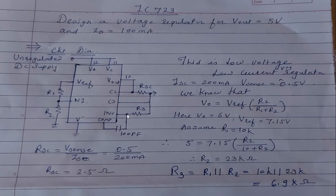There is a capacitor of 100 picofarads connected between the frequency compensation terminal and the inverting input terminal of the error op-amp to reduce noise. Now we will calculate the different resistance values. We assume ISC equal to 200 milliamperes and Vsense equal to 0.5 volts.